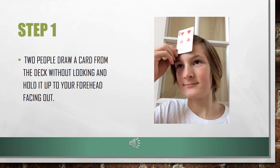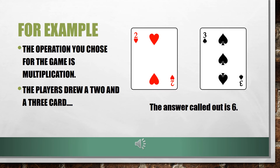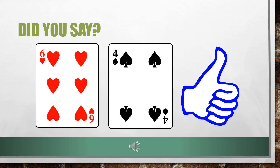Let's play. Step 1: two people draw a card from the deck without looking and hold it up to your forehead facing out. Step 2: the third person mentally puts the numbers together and gives them the answer. For example, the operation you chose for the game is multiplication. The players drew a 2 and a 3. The answer called out is 6. Did you say 6? You are a mind reader.